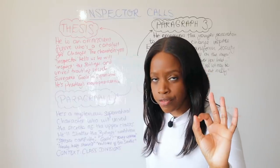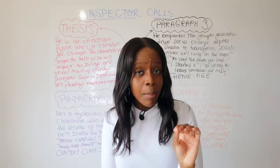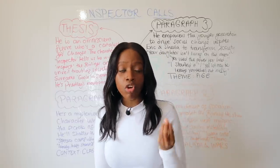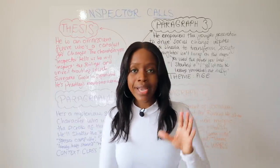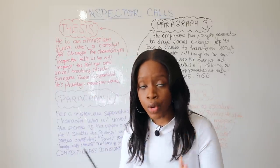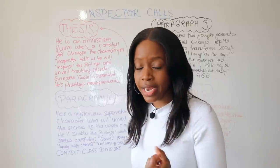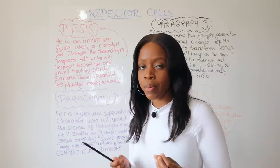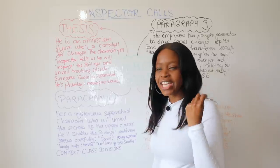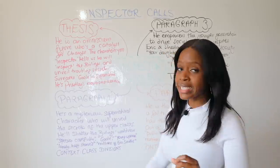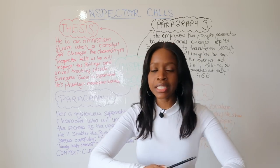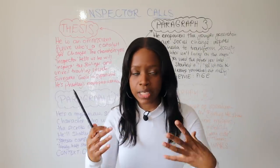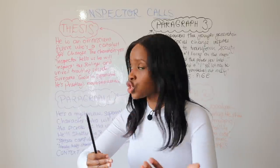Let's go over how to write about Inspector Goole's character. He only came up in the 2017 exam and hasn't come up since, so he's arguably a very strong contender for the character question. Inspector Goole is a pivotal character — he serves as Priestley's mouthpiece. In your introduction and opening thesis statement, remember that Inspector Goole is presented by Priestley as an omniscient figure — omniscient means godlike, everywhere all at once — and a catalyst for change whose appearance triggers the Birlings to change.